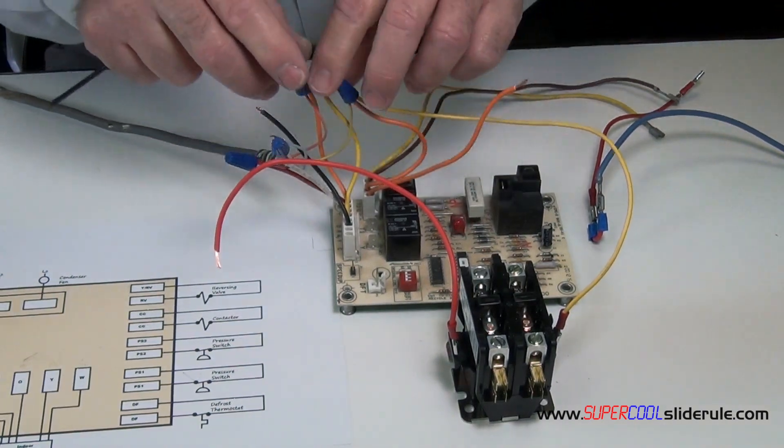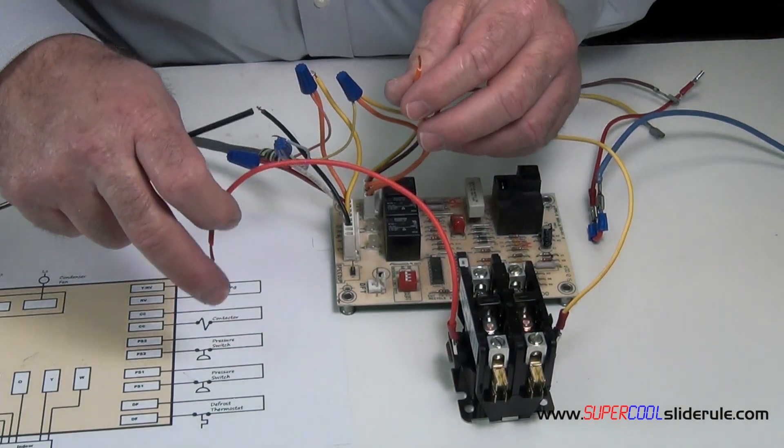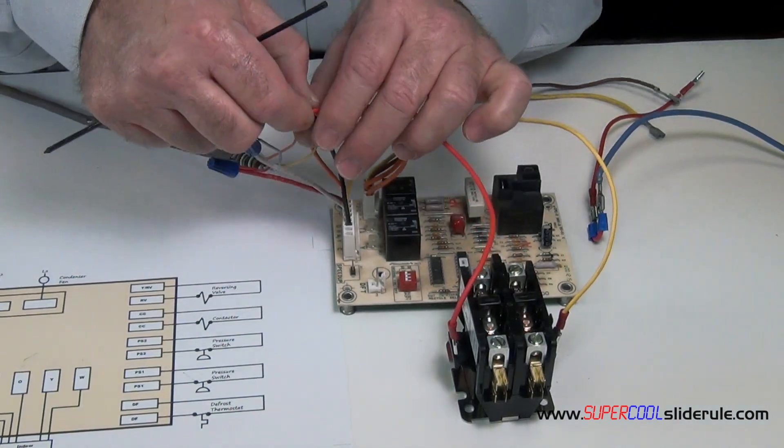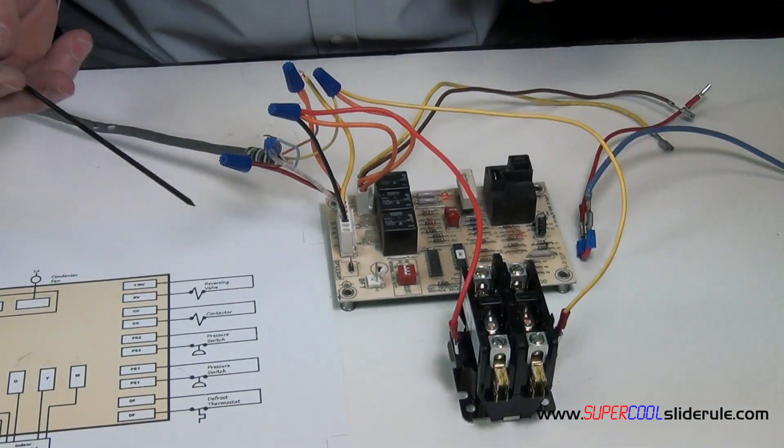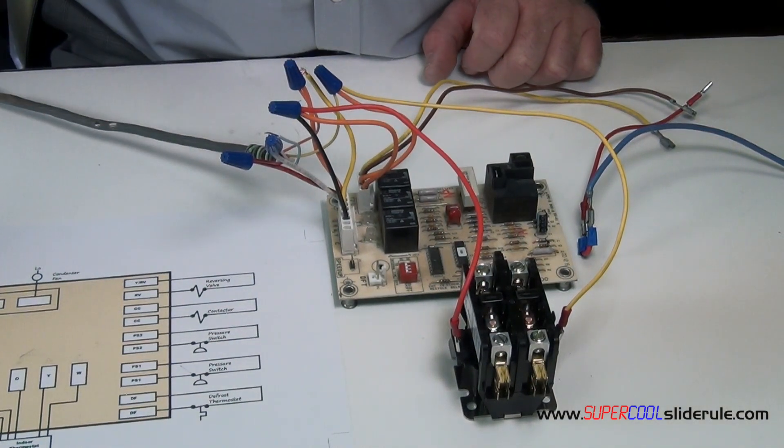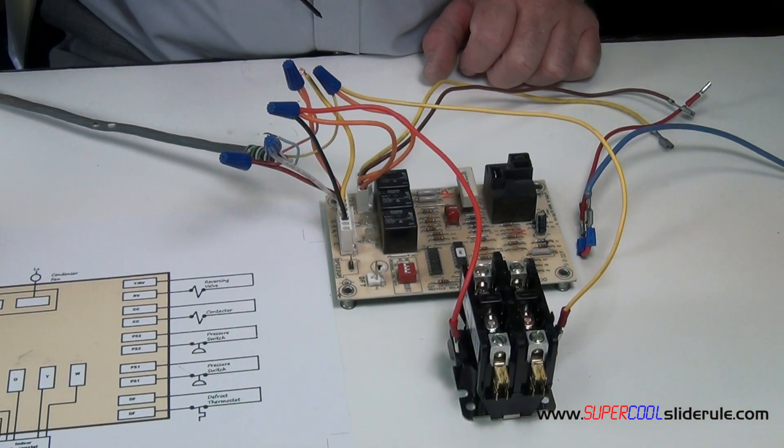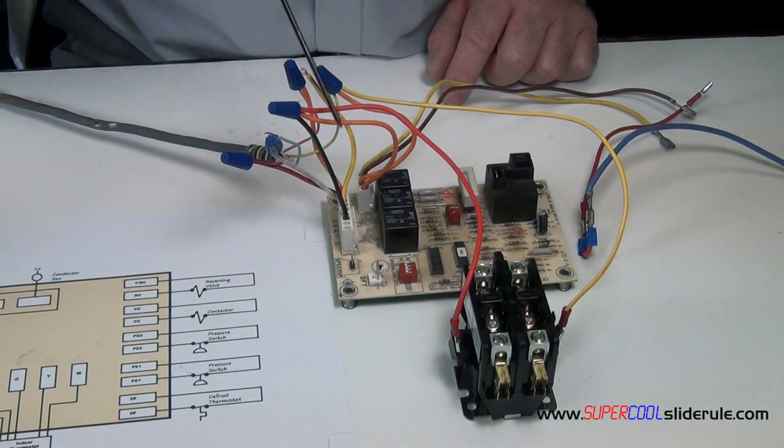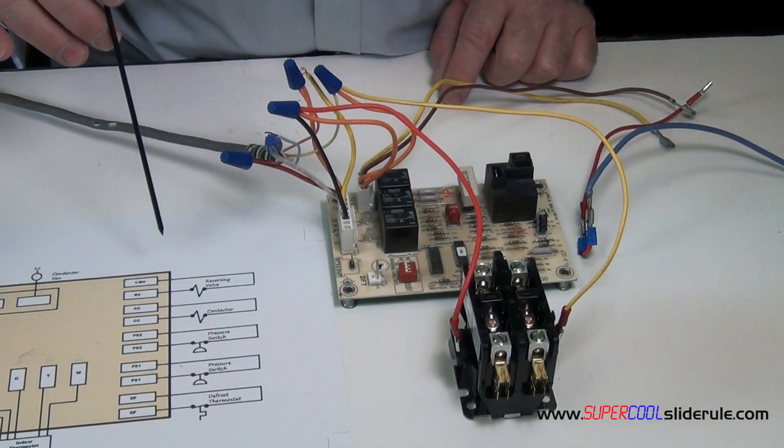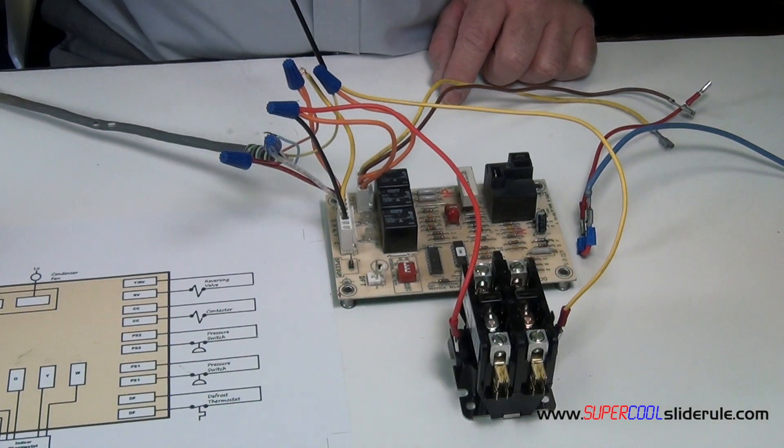That's one. The common back from the reversing valve and the common from the contactor will connect to the common from the thermostat. Now if there were any high or low pressure switches you could wire those in series as well if you so desired, that would be a better way of doing it. But this right here will allow this unit to run in cooling when we've completely bypassed our defrost board here.